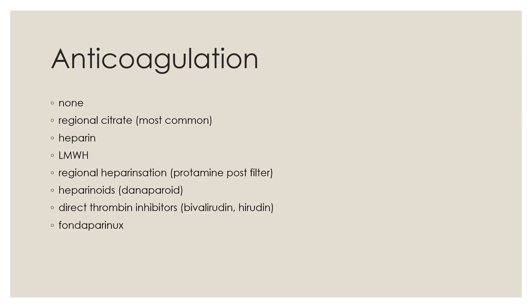Various types of anticoagulation can be used during renal replacement therapy. Sometimes no anticoagulation is given in view of underlying severe coagulopathy and lack of regional anticoagulation availability. The commonly used anticoagulation includes regional citrate anticoagulation and unfractionated heparin. Other anticoagulants include low molecular weight heparin, heparinoids, direct thrombin inhibitors or factor Xa inhibitor fondaparinux. Soaking the filter with unfractionated heparin — 5000 units per litre — before initiating therapy increases filter life even if regional citrate anticoagulation is contemplated, provided there is no contraindication to heparin.